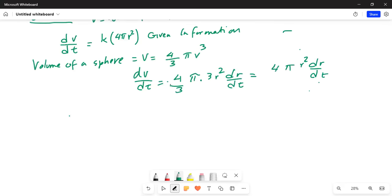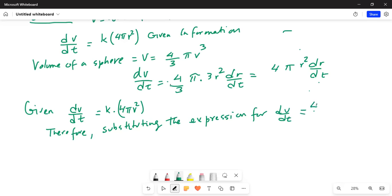Okay. Now we are given dV/dt. dV/dt is given. Given dV/dt is equal to k times 4πr². And this is given. And we have shown that is equal to, therefore, if we substitute, therefore, substituting the expression for dV/dt which we derived in the previous step is equal to 4πr².